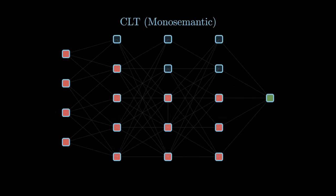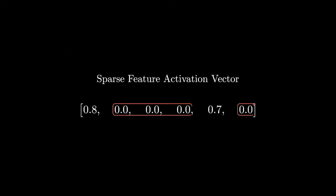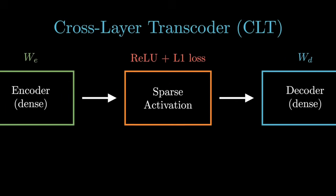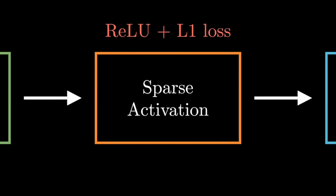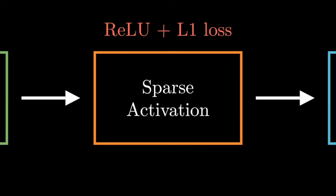But how are these sparse features activated? A feature should fire only when its specific pattern is present, which means most values in the activation vector should stay at zero. In the cross-layer transcoder, two main drivers keep this vector sparse, which are L1 regularization and RELU.